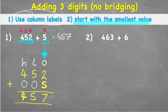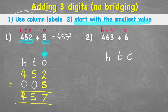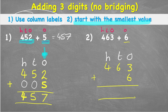Let's look at the next one a little quicker. I have 463 plus 6. For 463, I can see the 3 in the ones, the 6 in the tens, and the 4 in the hundreds column. The 6 on its own is just a ones digit. So I put hundreds, tens, and ones labels, and place 463: three ones, six tens, and four hundreds.